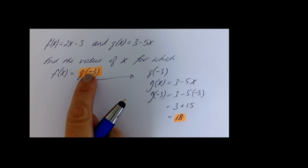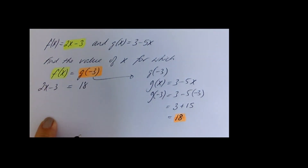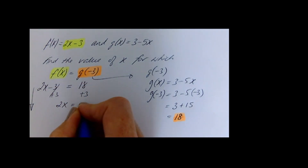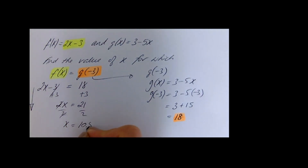Now substitute into the equation. On the left, f of x equals 2x minus 3, and on the right g of minus 3 equals 18. So the equation becomes 2x minus 3 equals 18. Add 3 to both sides: 2x equals 21. Divide by 2: x equals 10.5. That's the value of x for which f of x equals g of minus 3.